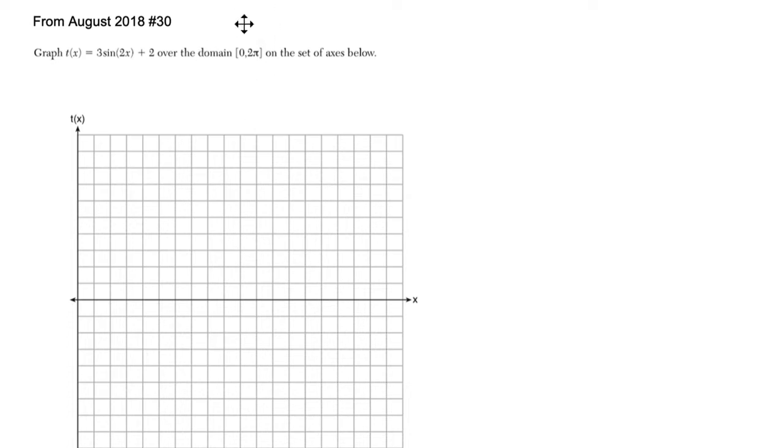Alright, so I think we can graph this pretty quickly by hand, and I'm going to try to convince you of that. I'm going to start by just writing this a little bit larger. So we have t of x, and I'm going to talk about it as I write it, is 3.